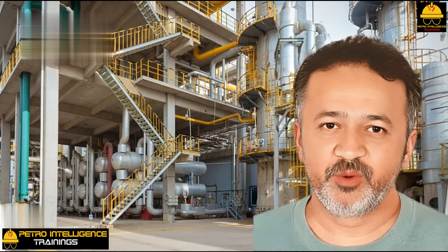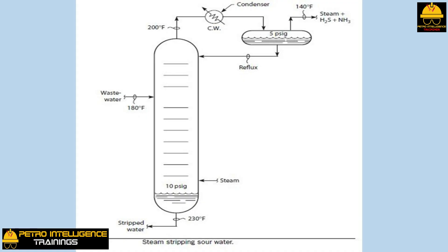The 230 degrees Fahrenheit stripper bottom temperature is simply the boiling point of water at the 10 psig tower bottom pressure. Small amounts of extraneous chemicals — phenol, alcohols, aromatics — dissolved in the stripped water do not change the boiling point temperature of the water. The 200 degrees Fahrenheit stripper tower top temperature is the dew point of the vapors leaving the top tray. Most of these vapors are steam, and that is why the tower top temperature is so high.